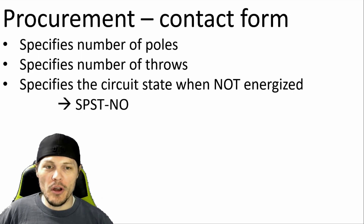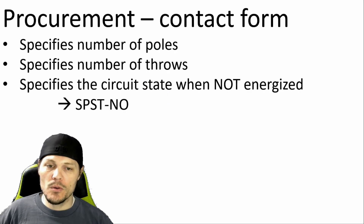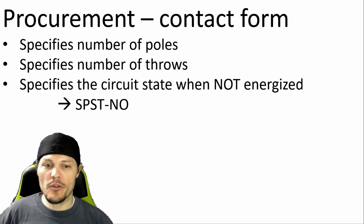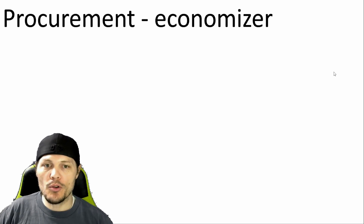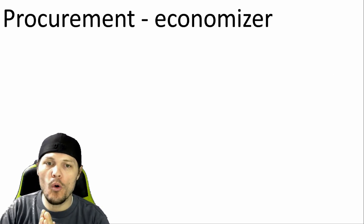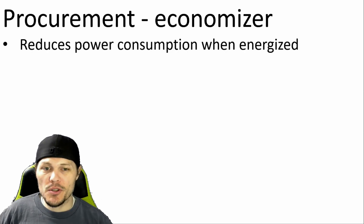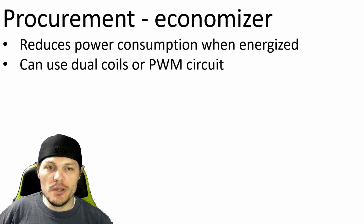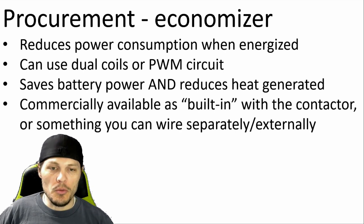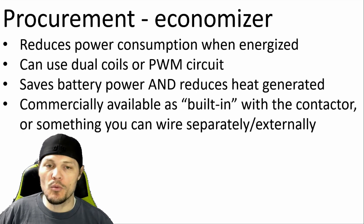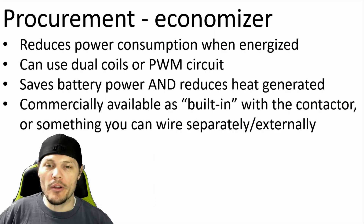With that additional requirement, googling around for contactors still returns a lot of results. An additional discriminator I learned about is whether the contactor has an internal economizer or not. An economizer is a way for the contactor to use high power during the initial pull-in, and then lower power to hold the contacts in place after they're already touching. This is accomplished either through dual coils or a small circuit board that provides pulse width modulation. This reduces steady state power consumption and consequently also helps reduce the amount of heat generated over time. Some contactors are commercially available with built-in economizers, and others are ready for an economizer to be separately or externally wired in. For my project, I think having the economizer built-in would be much more convenient.